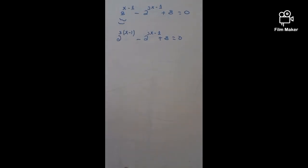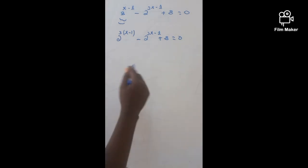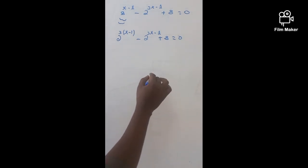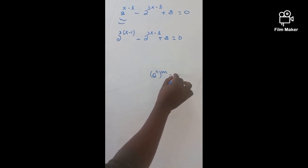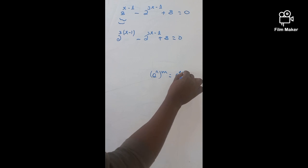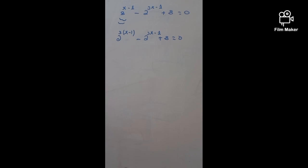Because you know the rule — the principle of exponential law. With the law of exponential, A raised N, the whole M — we have said what this means so many times in my past videos. A raised N, the whole M means A raised N times M.